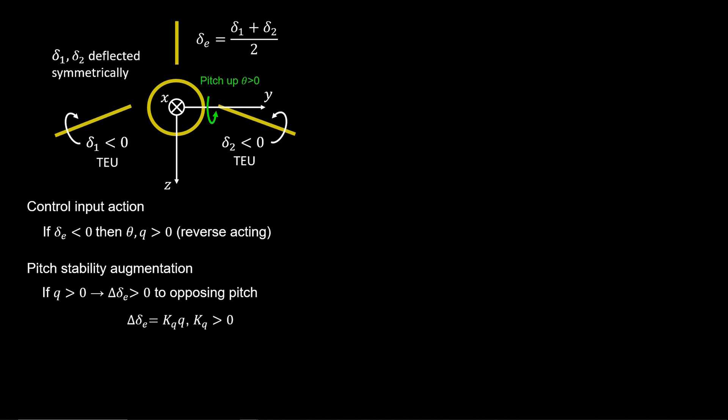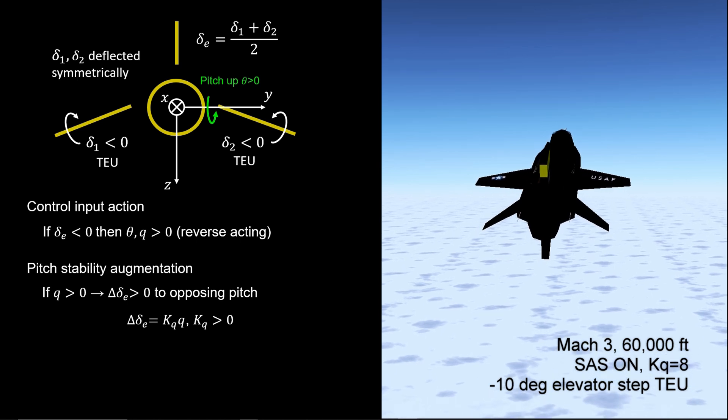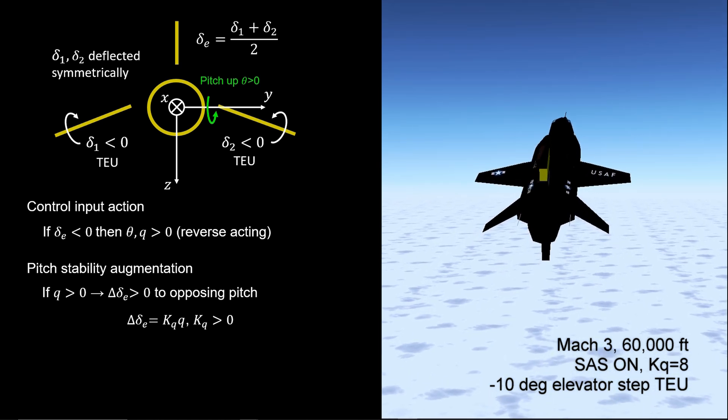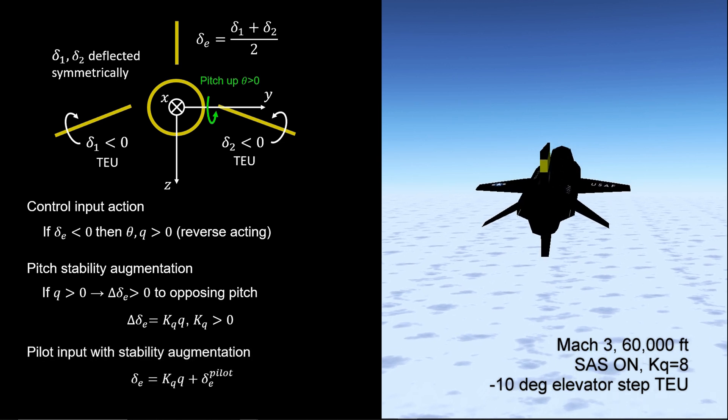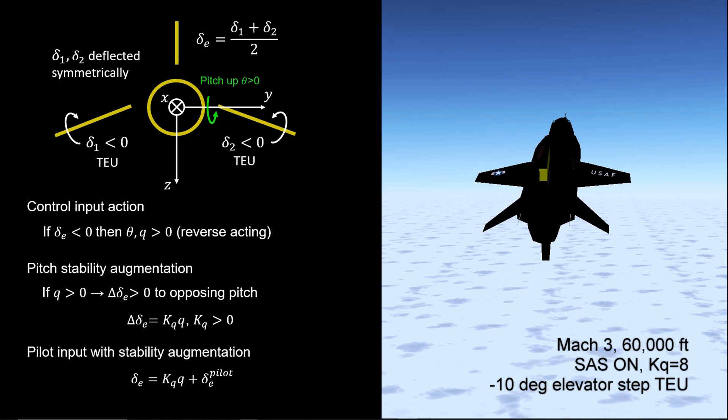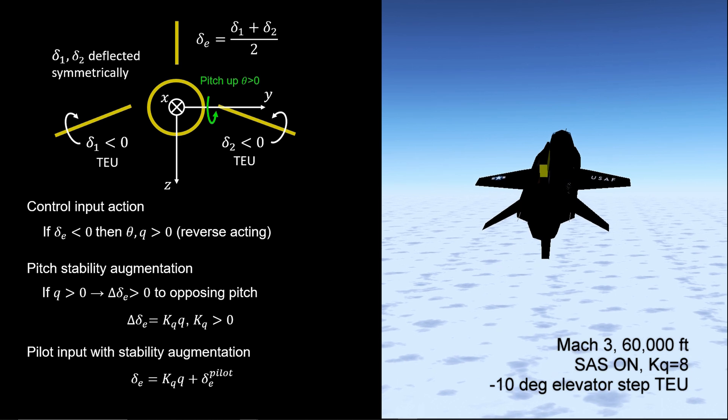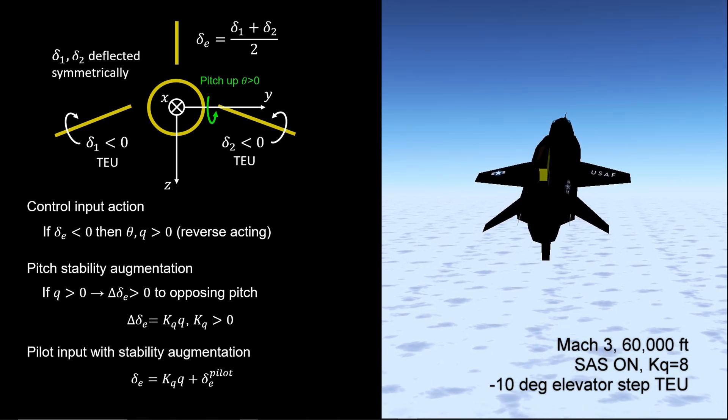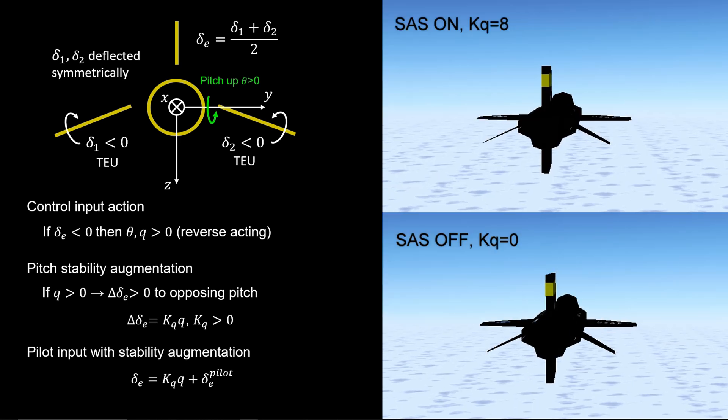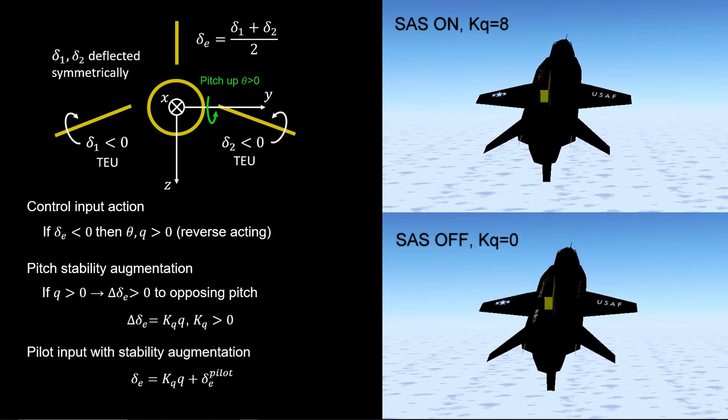From this idea, we propose a simple proportional feedback law, where pitch rate is the input, kq a positive gain for tuning, and del-E the change in elevator angle to oppose pitching. This law is summed with the pilot's elevator input to produce a total elevator effect that goes into the control actuation system and provides steering with stability augmentation. Now comparing pitch SAS on and off.